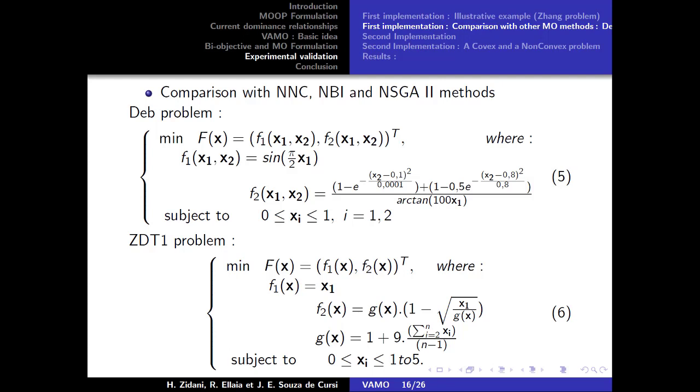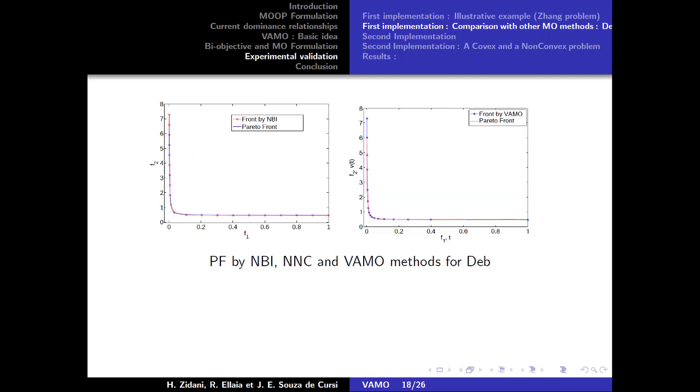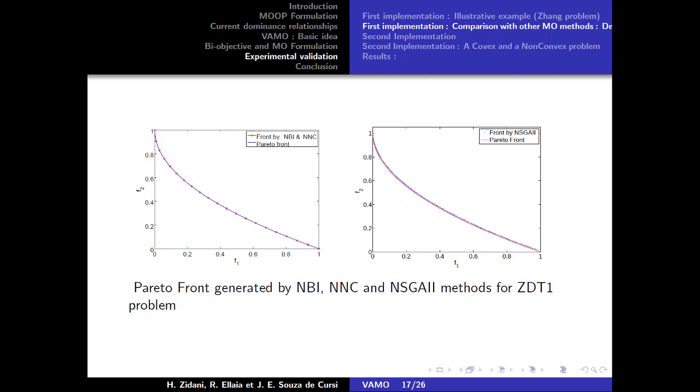Here, we propose a comparison of the VAMO method with methods which are widely used in multi-objective optimization in the field of engineering, namely the NNSC, NBI, and NSGA2 methods. The results are presented in terms of CPU time in seconds and the number of evaluation of the objective function. It is observed that the NSGA2 method is able to generate the Pareto front except for F2 greater than 6, with CPU time and number of function evaluation higher than those for the NBI and NNSC methods.